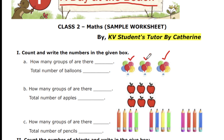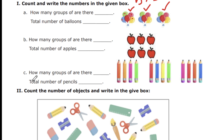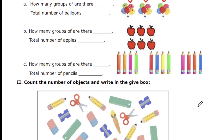How many groups are there? 1, 2, 3 — so you write 3 groups. For the total number of balloons, in each group there are 1, 2, 3, 4, 5 balloons. So in one group we have 5 balloons; 5 into 3 equals 15. Likewise, for apples you write how many groups and the total number. For pencils, count how many groups and the total number of pencils. You can also count individual pencils to cross-check.